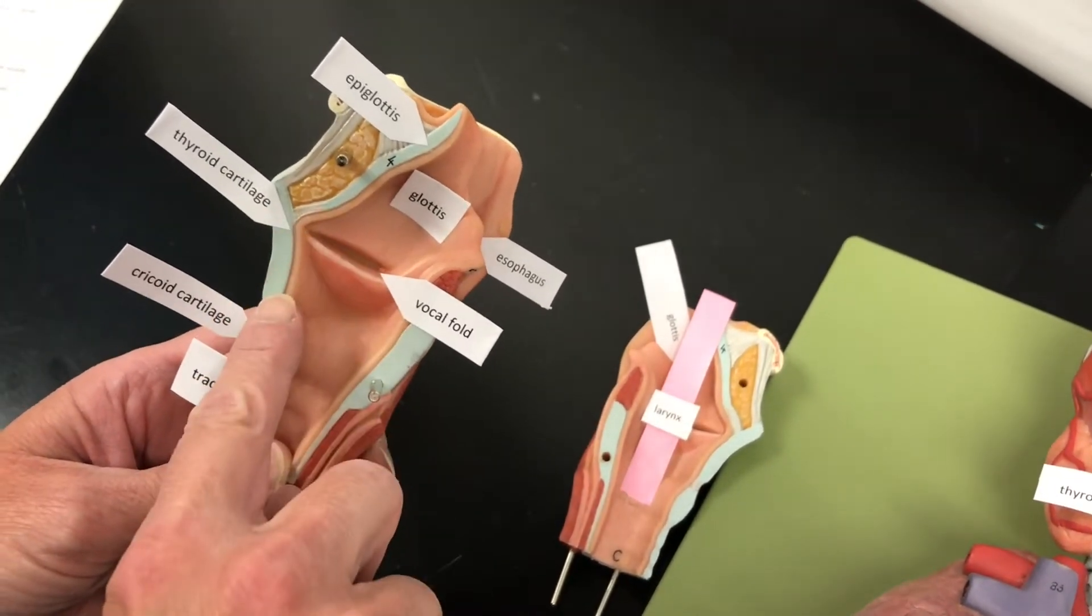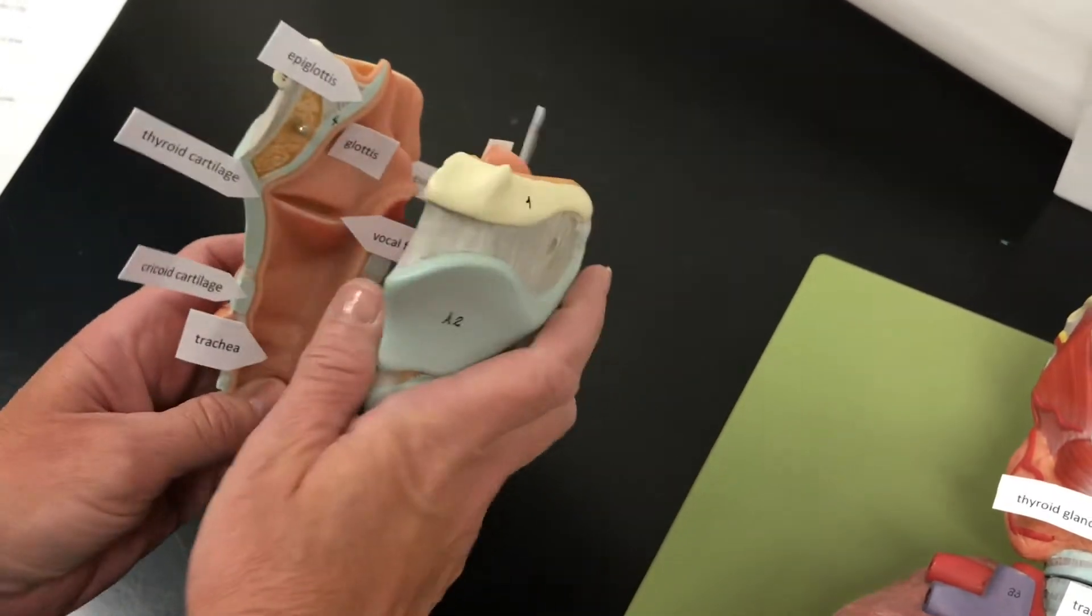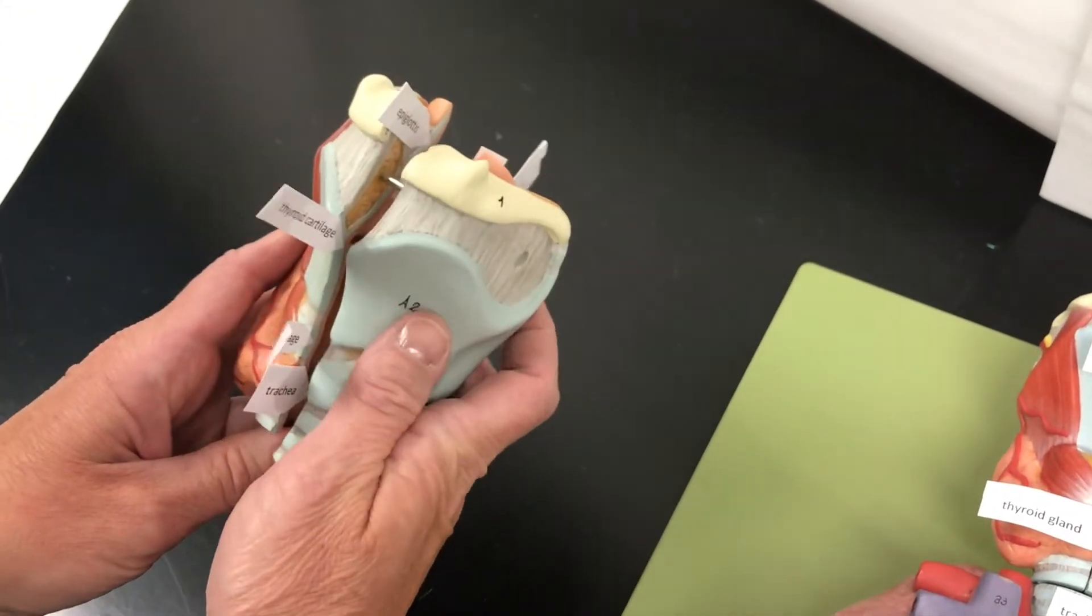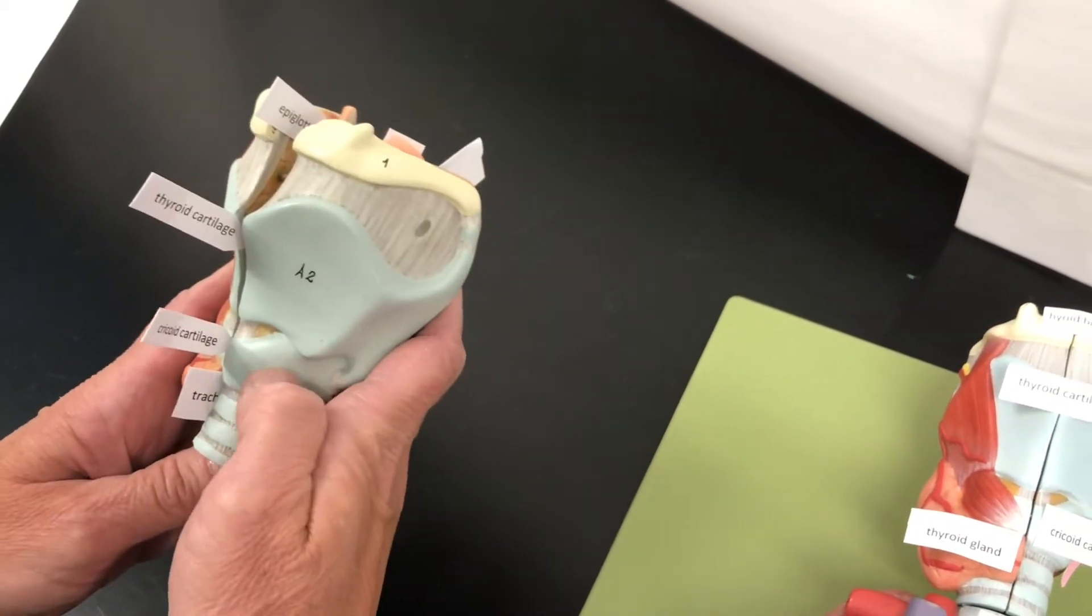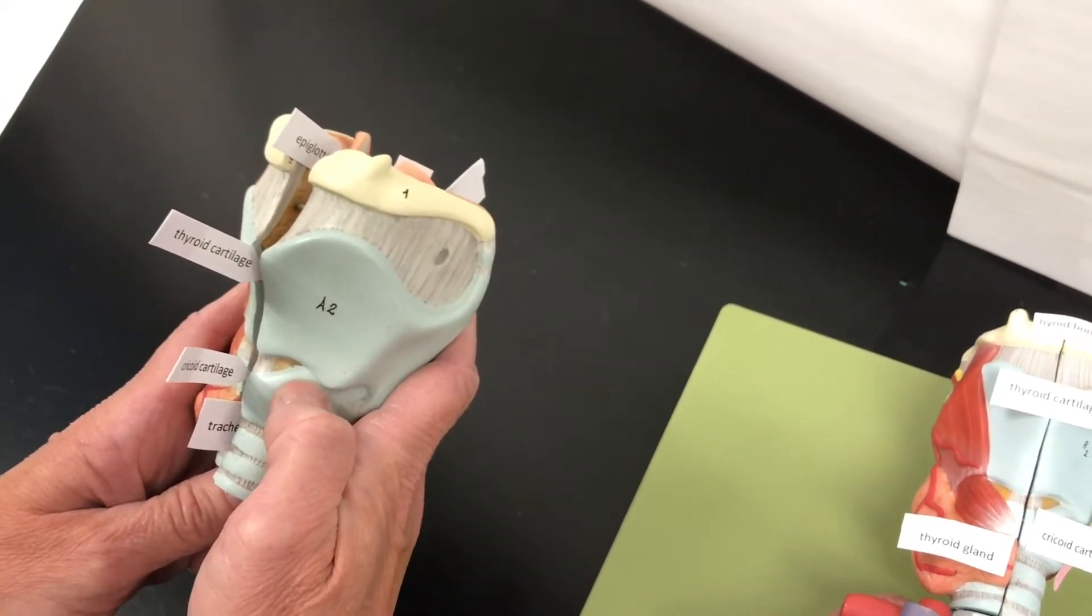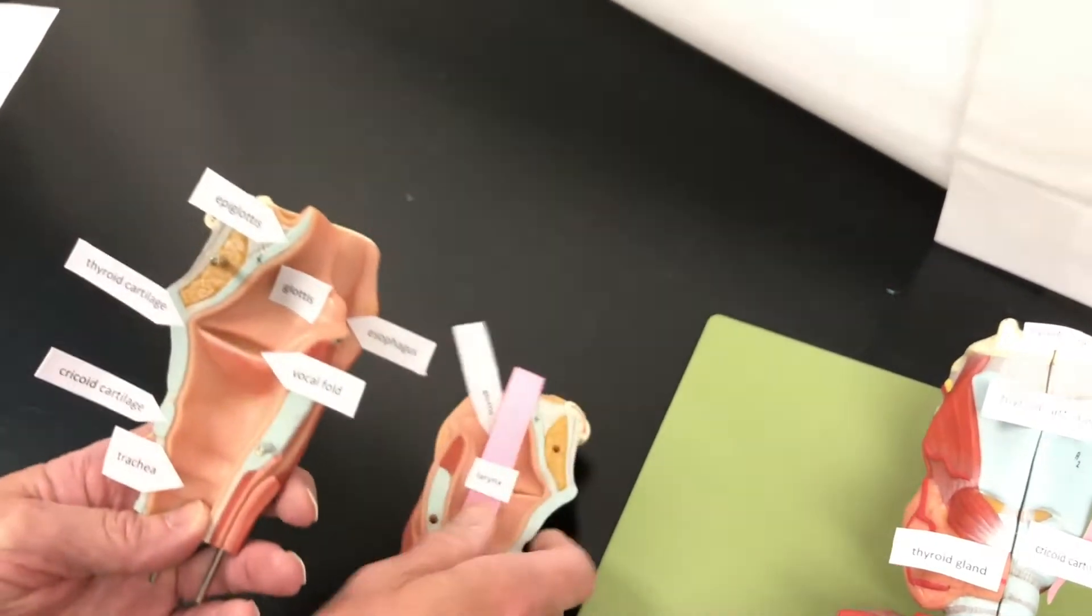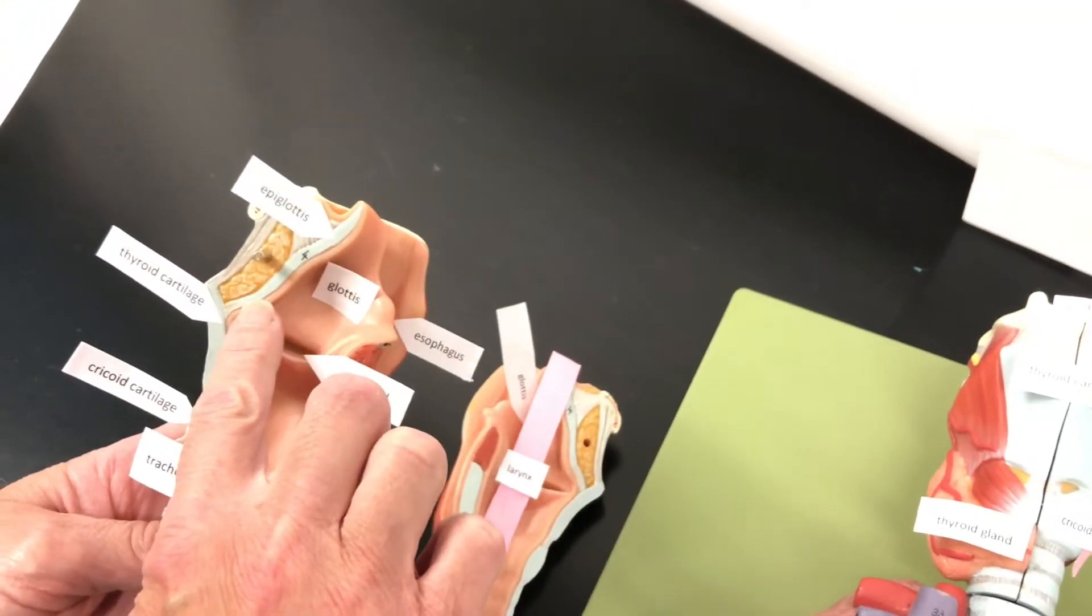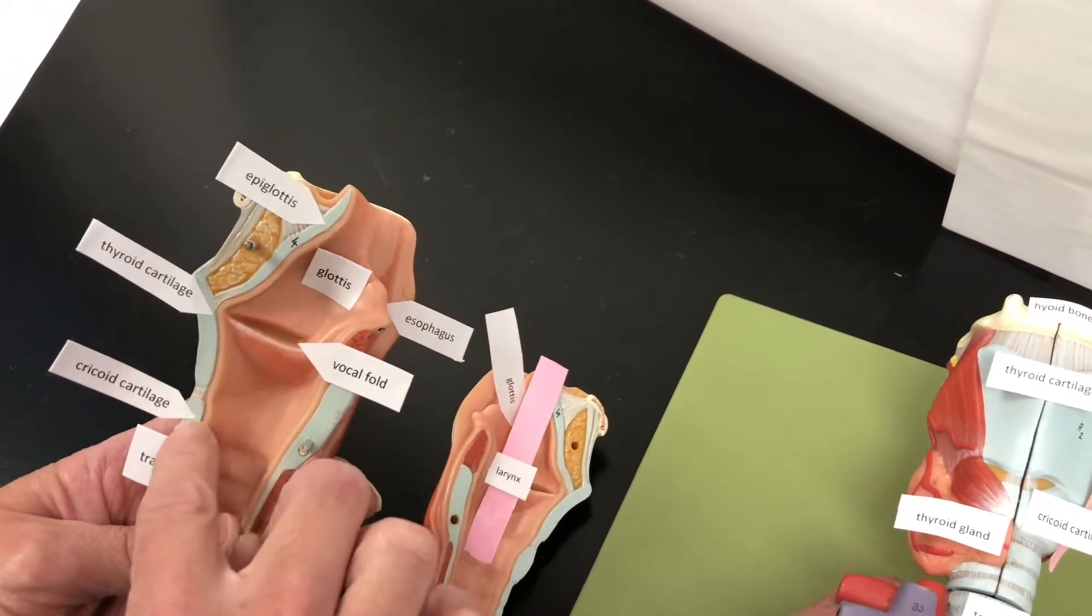This is the thyroid cartilage and the cricoid cartilage. So if I put this together, you can see the thyroid cartilage looks like a shield, and then the cricoid cartilage is ring-like. So the epiglottis is elastic cartilage. The thyroid and the cricoid cartilage are hyaline cartilage.